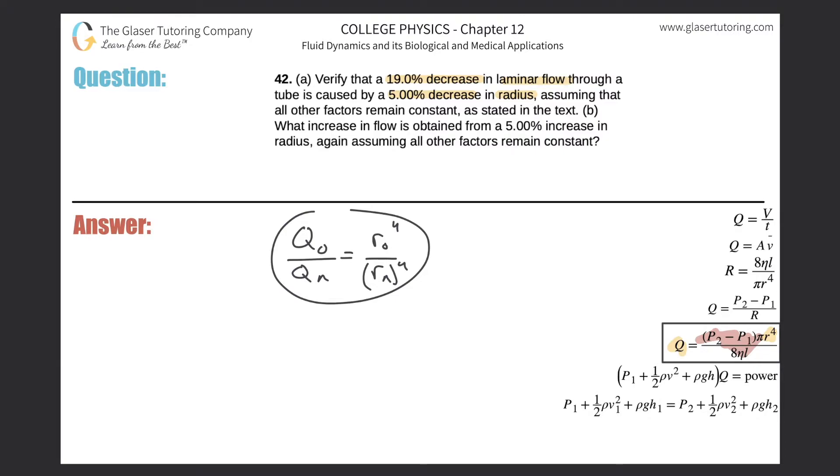Alright, this is a valid proportion now. So now what we have to do is somehow prove that a 19% decrease in laminar flow. So let's first start there. There's a 19% decrease in laminar flow. So that means that the new flow rate will be 19% less than the original.